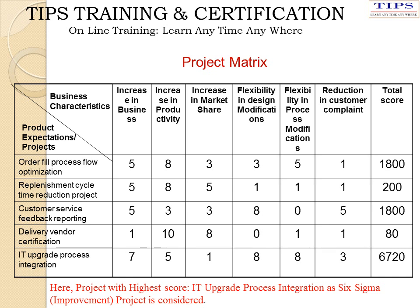Once you list down the various project ideas, these are required to be prioritized using the project matrix. In this slide we are seeing a project matrix, and based on the ratings given by the various experts, the total score is calculated and the project with the highest score — in this case, IT Upgrade Process Integration — is selected as the Six Sigma project.